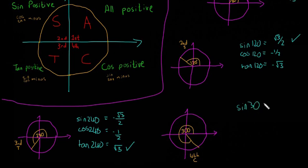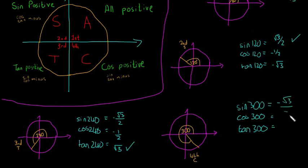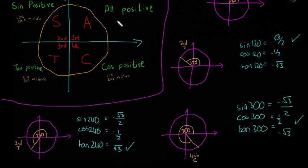Then the last one: sine of 300, cos of 300, and tan of 300. Here, cos should be positive and the rest should be negative. From the calculator, sine of 300 is minus root 3 over 2, cos of 300 is plus a half, and tan of 300 is minus root 3. So cos is positive and the other two are minus. We've confirmed the fourth quadrant as well. So all positive, sine positive, tan positive, and cos positive.